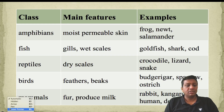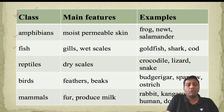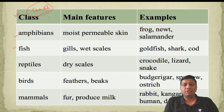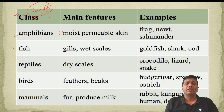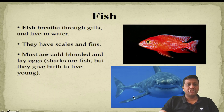These features apply to many chordates including vertebrates, fishes, and amphibians. Vertebrates and invertebrates are chordates and non-chordates. The chordate examples include fishes, amphibians, reptiles, birds, and mammals. Key features: amphibians have moist permeable skin — examples are frogs, newts, salamanders. Fish have gills and wet scales — examples include goldfish, shark, and cod. Reptiles have dry scales — examples are crocodile, lizard, and snakes. Birds have feathers — examples are sparrows and ostrich. Mammals have fur and produce milk due to the presence of mammary glands — examples include rabbit, kangaroo, human, and dolphin.